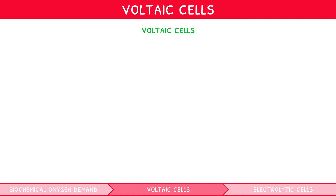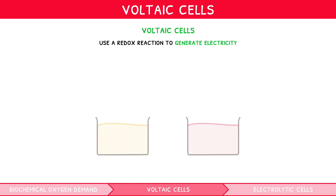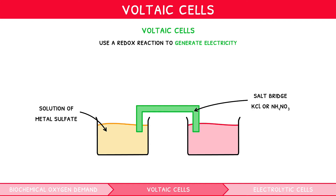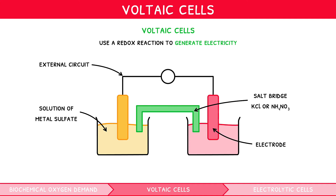Voltaic cells are a specific apparatus which uses a redox reaction to generate electricity, i.e. it converts chemical energy to electrical energy. They take place in galvanic cells, which consist of two containers, each containing a different aqueous solution of metal sulfate. Connecting the two solutions is a structure known as a salt bridge, which is made of either potassium chloride or ammonium nitrate. Each solution also contains a metal plate, known as an electrode, made of the same metal as the solution. The two electrodes are connected by a thin external wire.